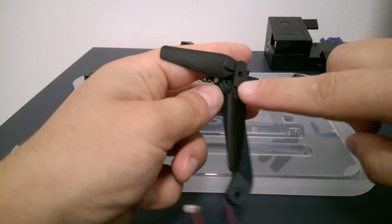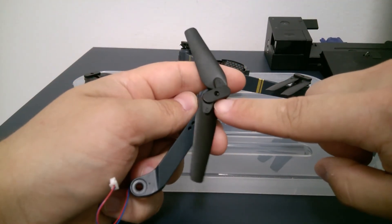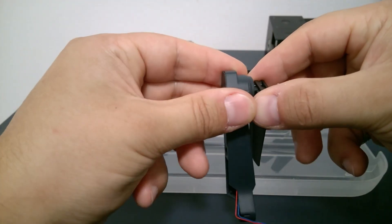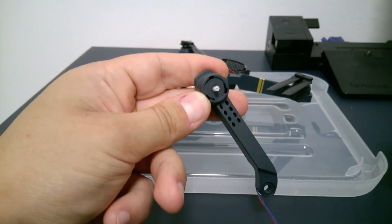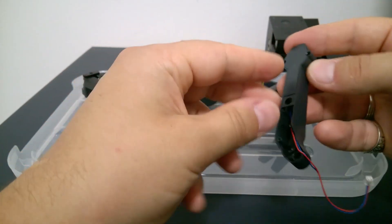The screw from the propeller is also different, keep it in a different place. Now remove the propeller. And now we can remove the cap.